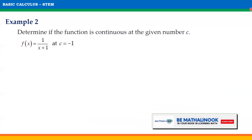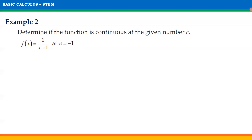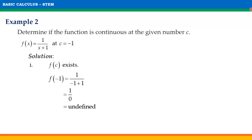Now let us consider a function that is not a polynomial function. Determine if the function f(x) = 1/(x+1) is continuous at C = −1. For the first condition, f(C) exists — substituting −1 for x gives f(−1) = 1/(−1+1) = 1/0, which is undefined. Since substituting −1 gives an undefined value, condition 1 is not satisfied.